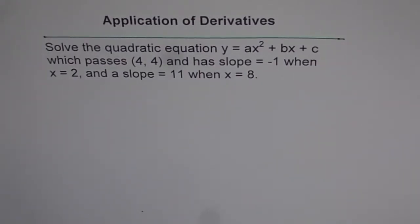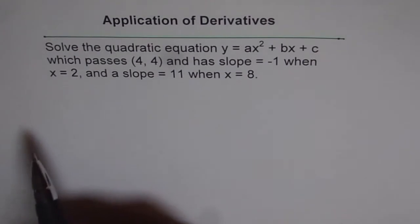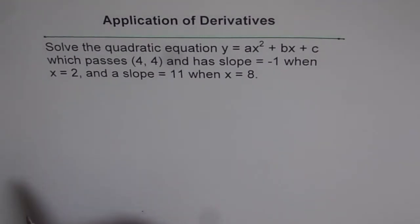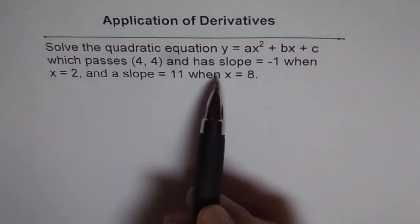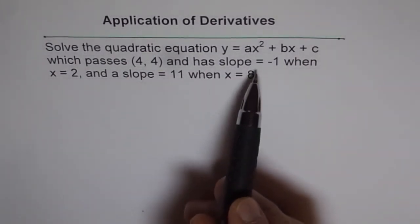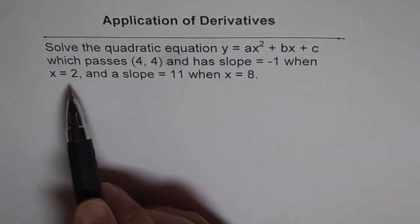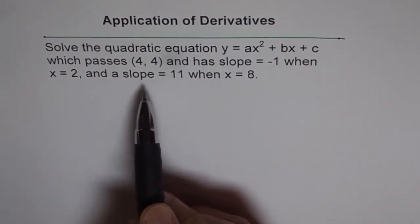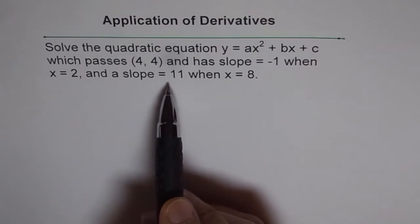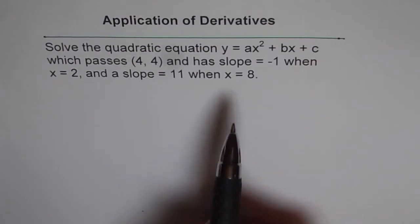Application of derivatives. Solve the quadratic equation y equals ax squared plus bx plus c, which passes through the point (4, 4), and has a slope equal to minus 1 when x equals 2, and a slope equal to 11 when x equals 8.